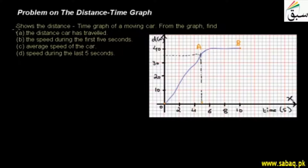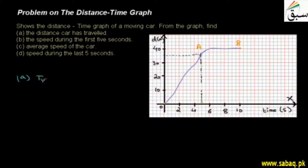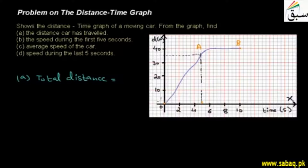Now, first of all, if we look at the solution, we have to find out part A — the distance the car has travelled. How much total distance has it travelled? You can find out from the graph. Looking at the Y-axis, you can see that the maximum distance it has travelled is 40 meters.